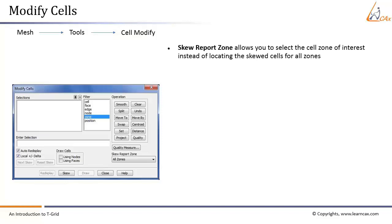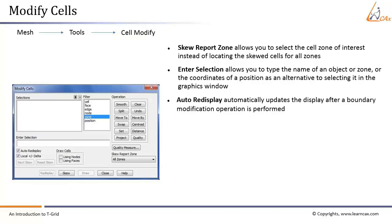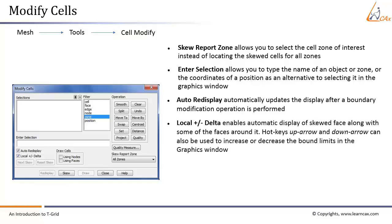This option allows you to select the cell zone of interest instead of locating skewed cells across all zones. Enter Selection allows you to type the name of an object, a zone, or coordinates of a position as an alternative to selecting it in the Graphics window. Auto Redisplay automatically updates the display after a boundary modification operation is performed. Local Plus or Minus Delta enables automatic display of the skewed face along with some surrounding faces. Hotkeys Up Arrow and Down Arrow can also be used to increase or decrease the bound limits in the Graphics window.